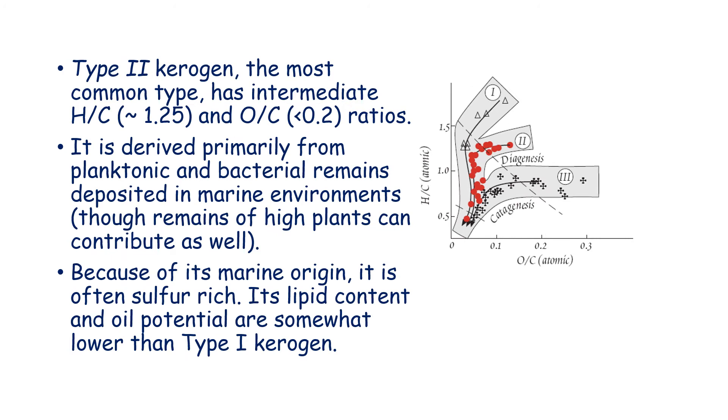When we look at type two, it is actually the most common type because it has intermediate values for hydrogen carbon ratio and oxygen carbon ratio. It is derived from planktons, bacterial remains deposited in marine environments, and some remains of high plants from the terrestrial environment. So this is actually a mixture. It has got something from the sea and something from the land. Because of its marine origin, it is often rich in sulfur. The lipid content of oil and oil potential are somewhat lower than type one.